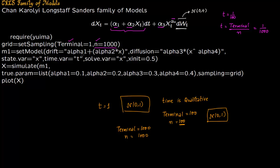So you're going to set the model. You just copy it. This is your drift part: alpha one plus alpha two times x. Then you have diffusion part: alpha three times x to the power of alpha four. The state variable is x, your time variable is t, you solve for x. I'm putting initial value as 0.5, you can give what you want to. We're going to simulate this model m1. This is the model m1 we set right here.